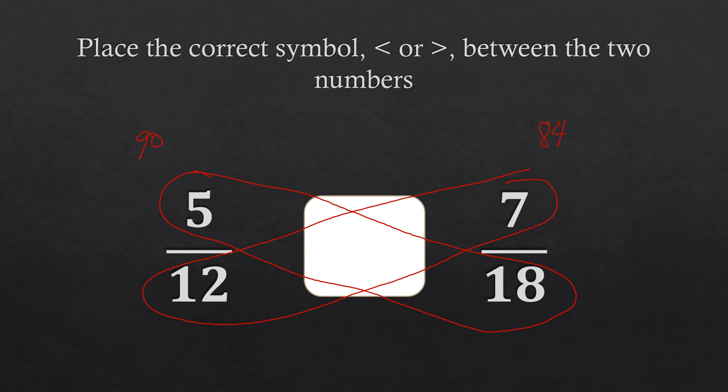And then we know that ninety is bigger compared to your eighty four, then your symbol will be this one, which is the greater than. So you have there five twelfths is greater than seven eighteenths.